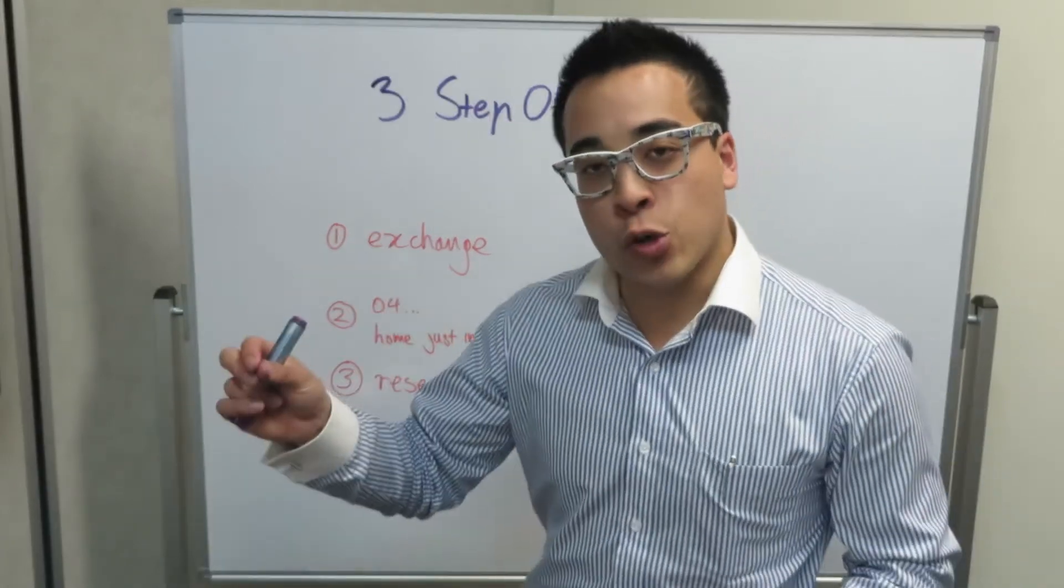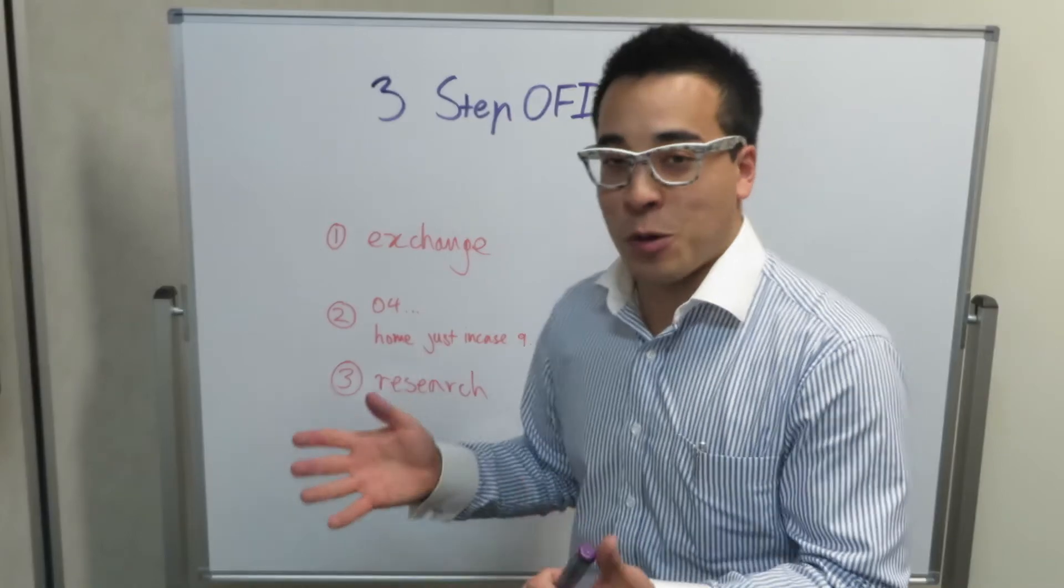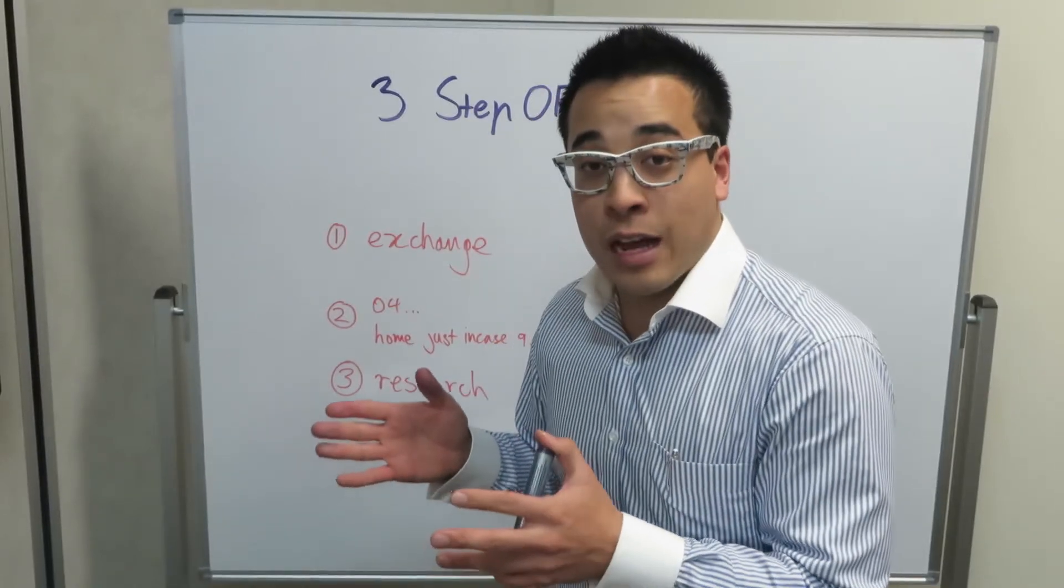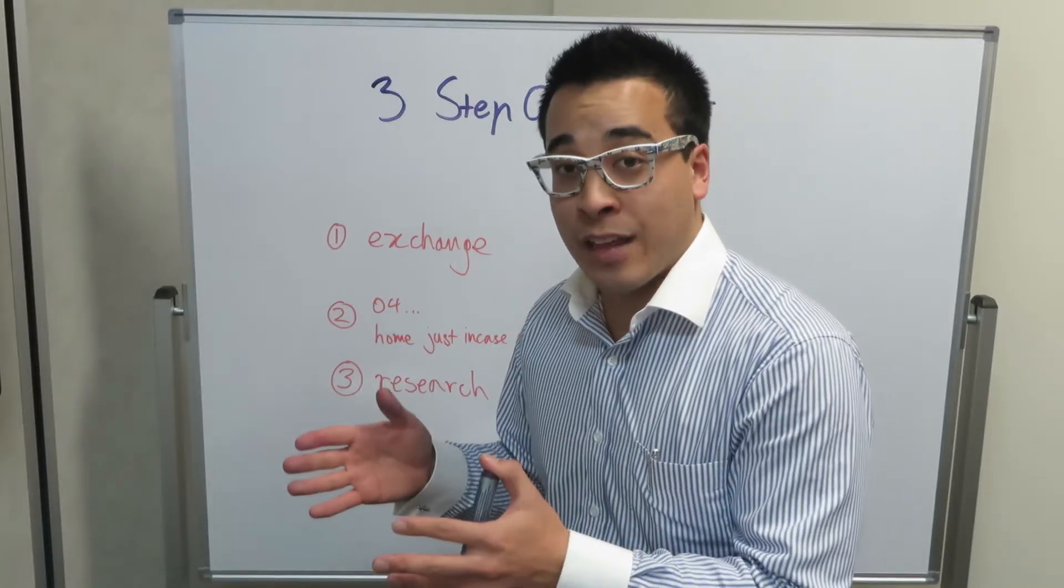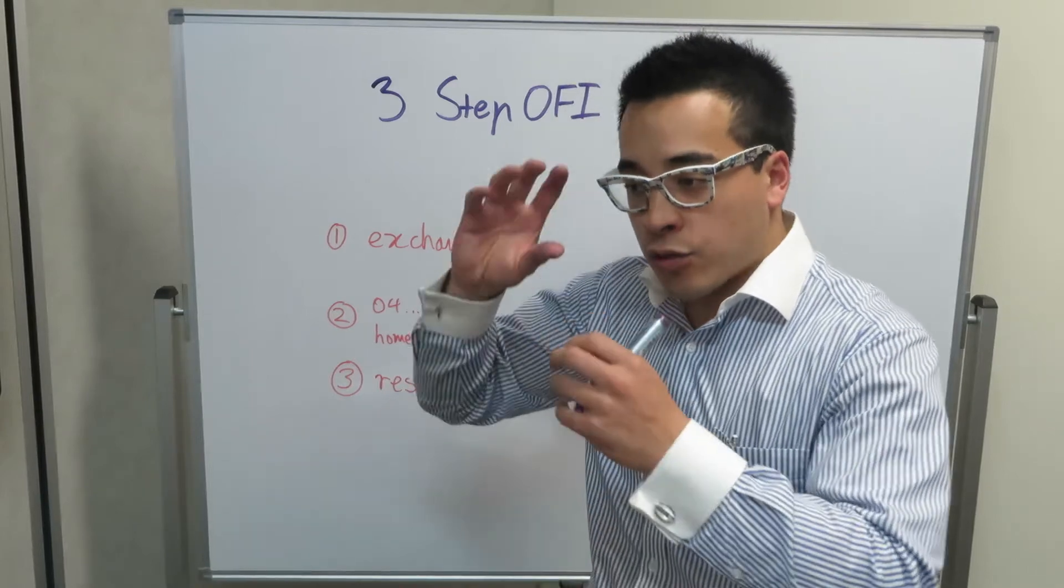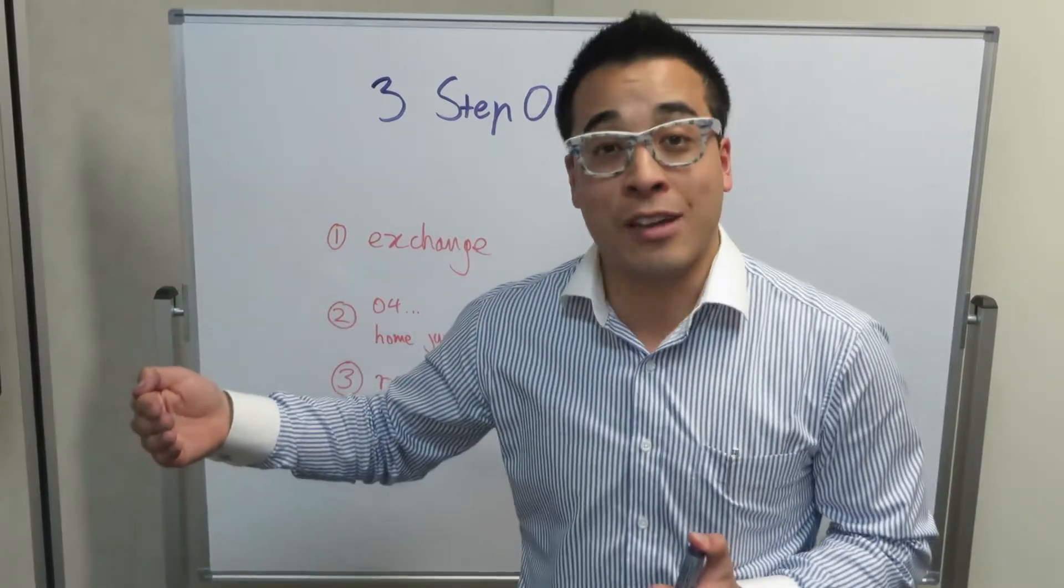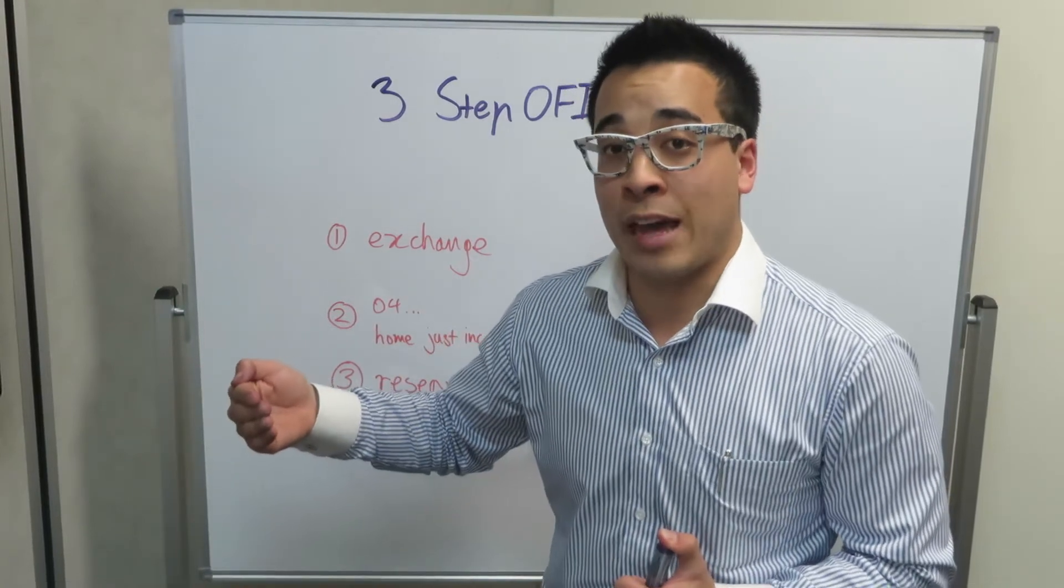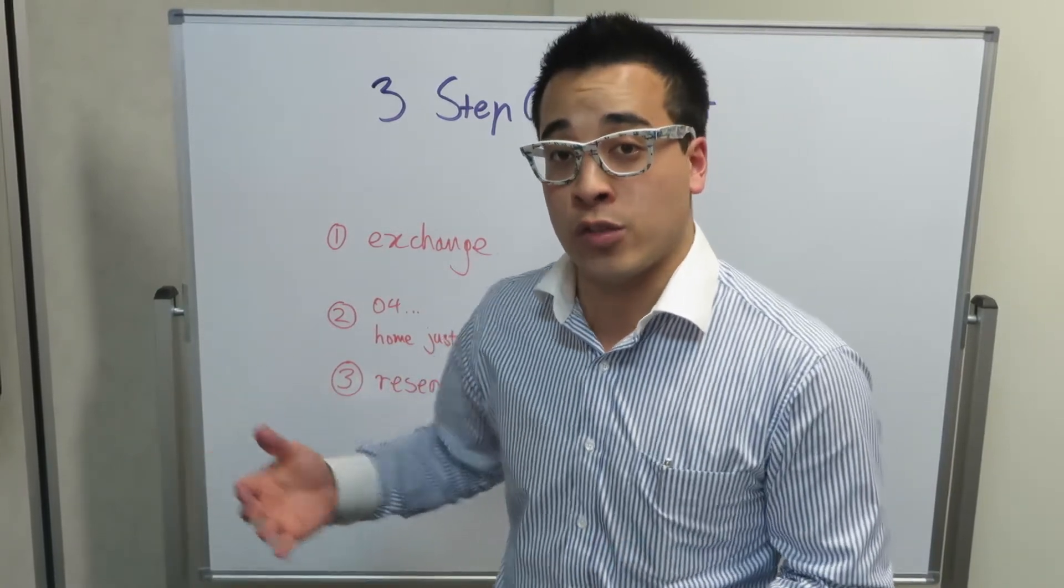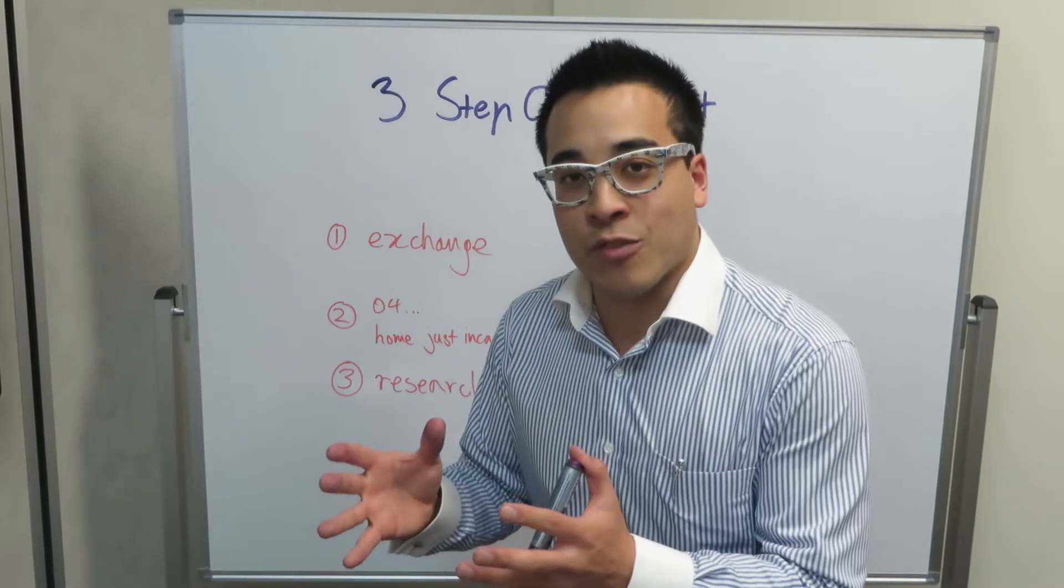But the reason why you ask the first question first, which is how did you first find out about the house for sale, is because that triggers something in their brain going, okay, these are research questions. They're not asking me where I'm living or asking me for my address. They're just asking me research questions.